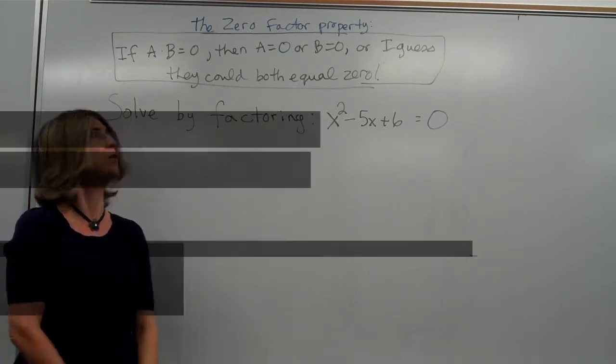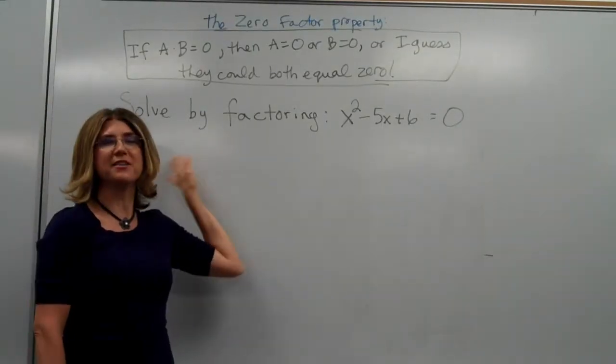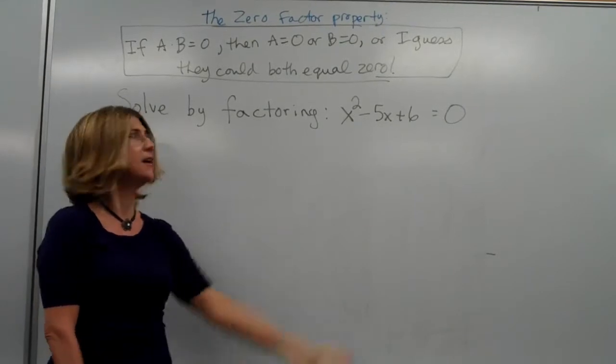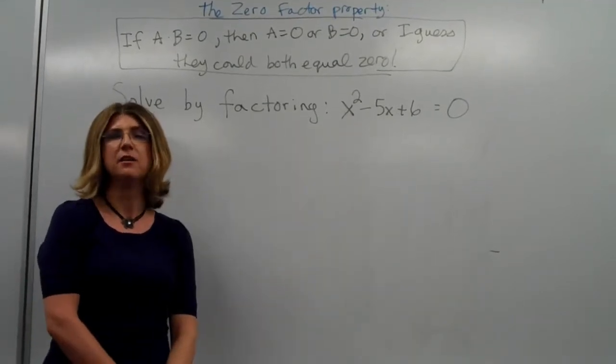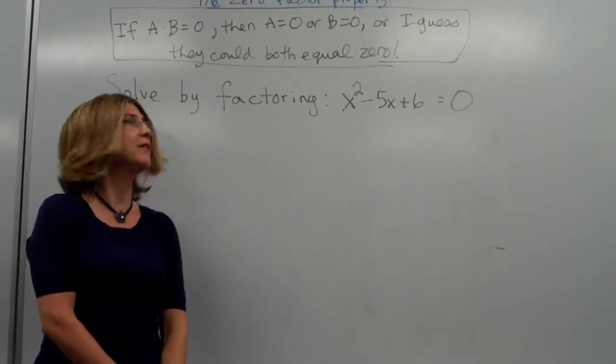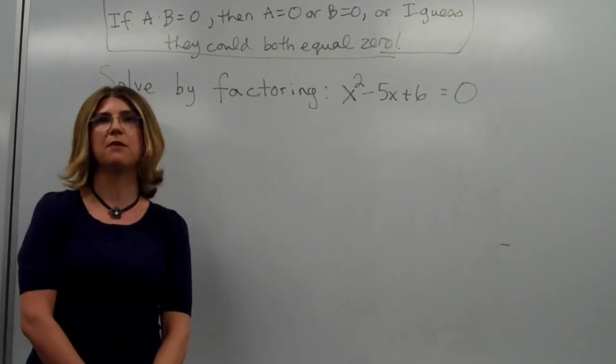one of those two things must equal zero. Let's use the zero factor property to solve this equation by factoring. This is a quadratic equation, and there's more than one way that we can solve it, but let's go ahead and solve it by factoring.